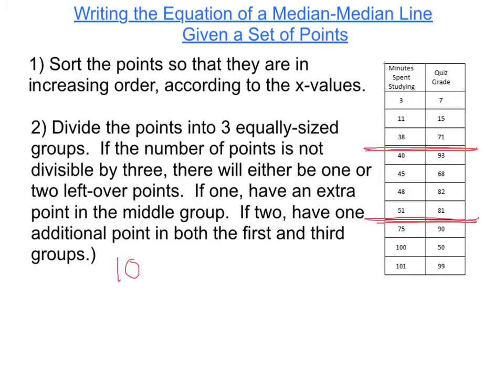Notice that I divided my data points into three groups: the first group had three, the next grouping had four, and the third group had three data points. So you can see my extra point was included in the middle grouping.